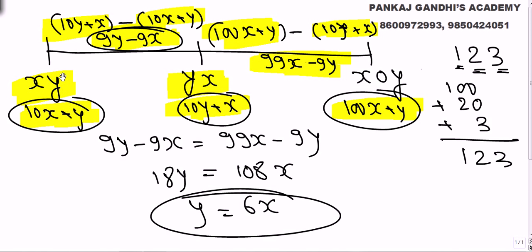I quickly repeat. First it saw xy that is 10x plus y. Then it saw yx that is 10y plus x and then it saw x0y that is 100x plus y. One hour this minus this, one hour this minus this. Distances are equal because speed is constant. So we get y equal to 6x.